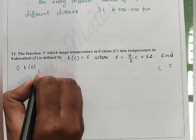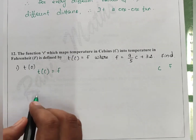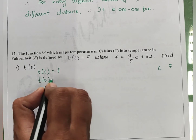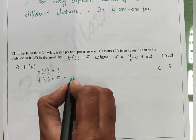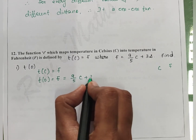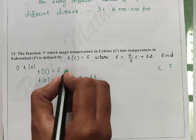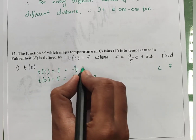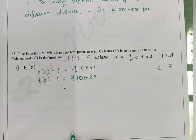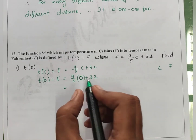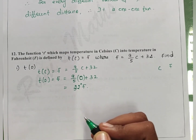t(C) equals F. For t(0), we substitute C equals 0 into the formula: F equals 9 by 5 into 0 plus 32. So t(0) equals 32 degrees Fahrenheit. This is our first answer.